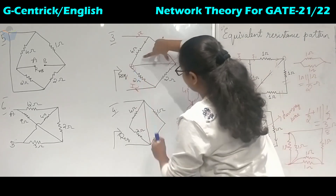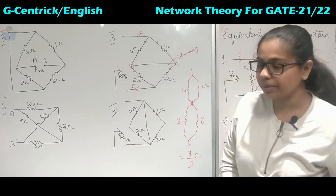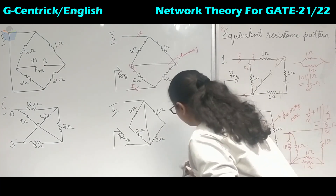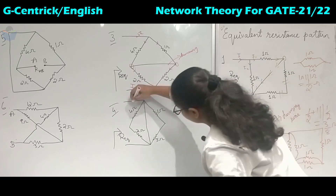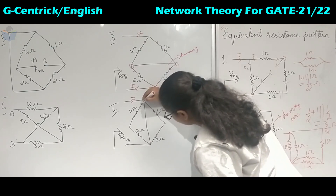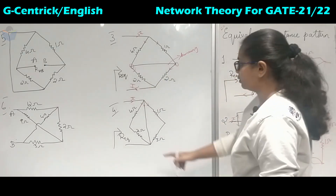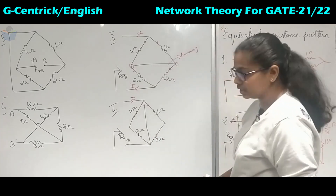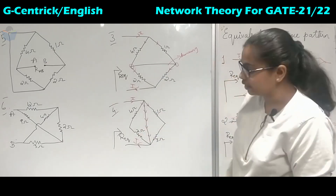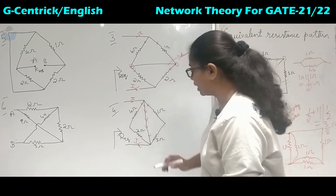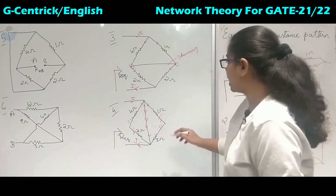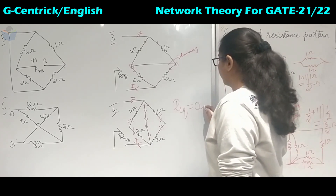Since it is a common point, you must assume it as a single node. Coming to the fourth question — finding R equivalent: if current enters, it has to divide here, here, and here. But it has a direct return path, so all the current will go in that direction and exit at that point. The four, two, one, and three ohm resistors have no significance — zero ampere current flows through them. So R equivalent here is zero ohms.